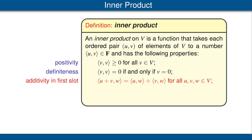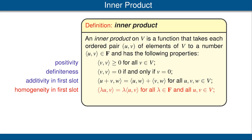Our third property is called additivity in the first slot. This means fix a vector w in the second slot, and then we have the additivity property shown by the equation here. The next property is called homogeneity in the first slot. Again, fix a vector in the second slot, and then we have the equation shown here, which indicates that if we have a scalar times a vector in the first slot, then we can bring the scalar outside.